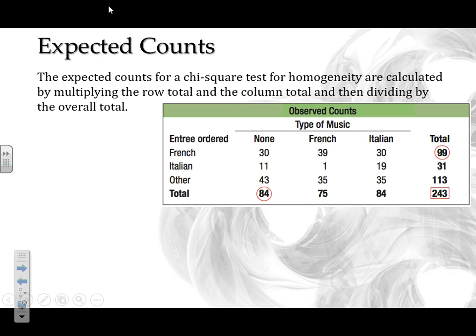In our two-way table we have nine different cells — nine combinations of treatments and entree types. When we talk about cells, we exclude the row and column totals. Row totals are the totals for each row: 99 people ordered French, 31 ordered Italian, and so on. Column totals: 84 people had no music, 75 had French music, and so on. So for the expected count for 'no music, ordered French,' I take the row total of 99 times the column total of 84, divided by 243.